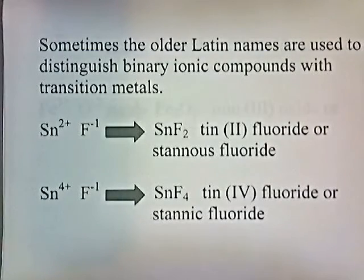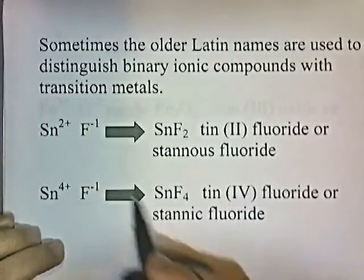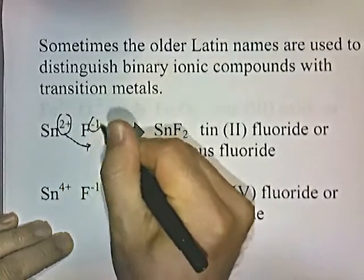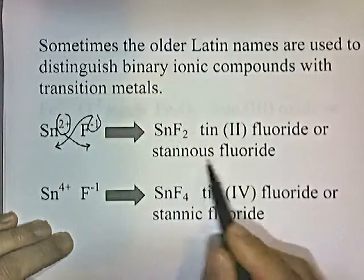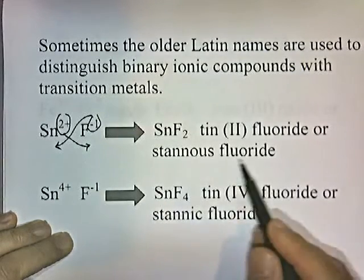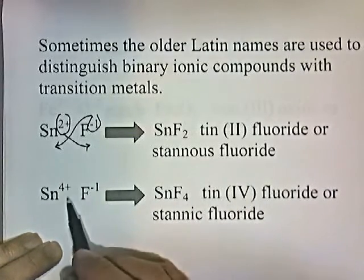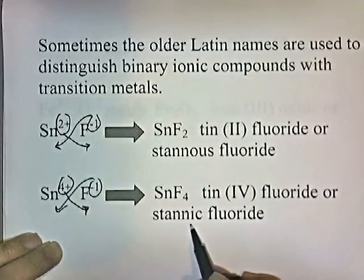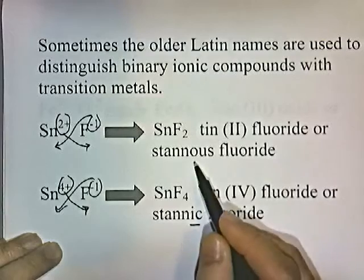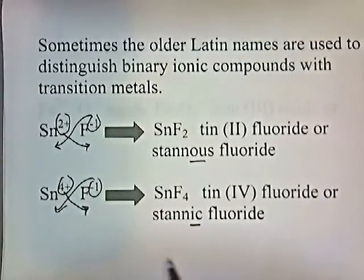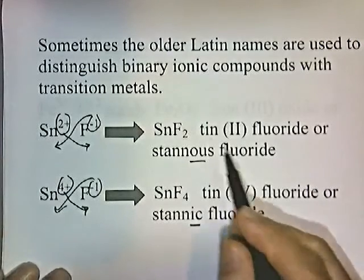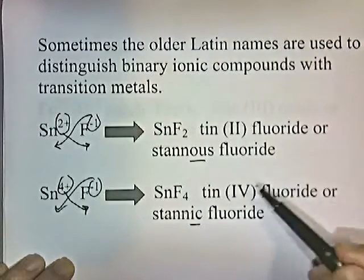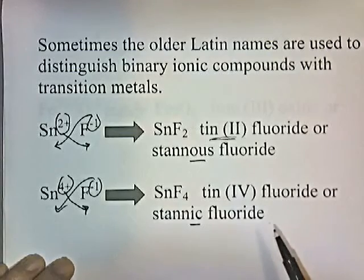Sometimes the older Latin names are used to distinguish binary ionic compounds with transition metals. Tin with a plus two charge gives SnF2, called stannus fluoride. Tin with a plus four charge gives SnF4, called stannic fluoride — ending in -ic because plus four is the higher oxidation state. Using the newer system, you would simply call them tin 2 fluoride and tin 4 fluoride.